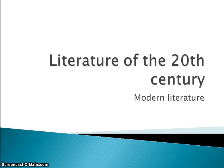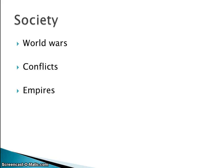This lecture is about the literature of the 20th century, also known as modern literature. The two world wars obviously had a big impact on the literature of the 20th century, and other conflicts like the Vietnam War, apartheid in South Africa, and racial problems in America were also made visible in the literature.